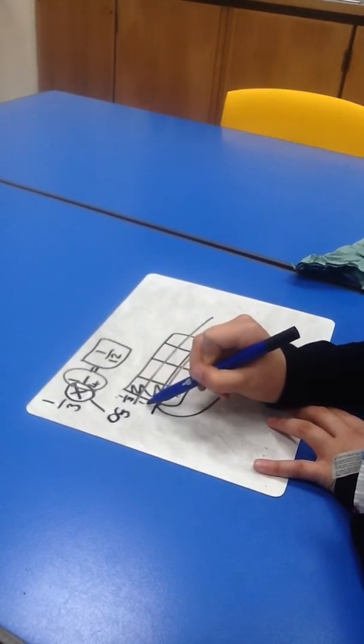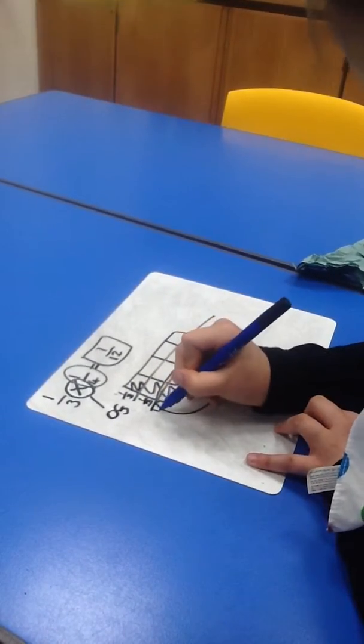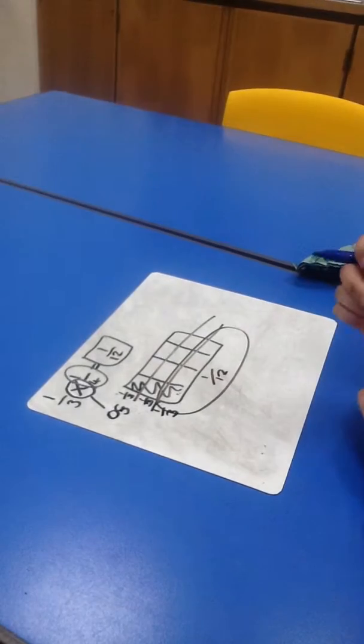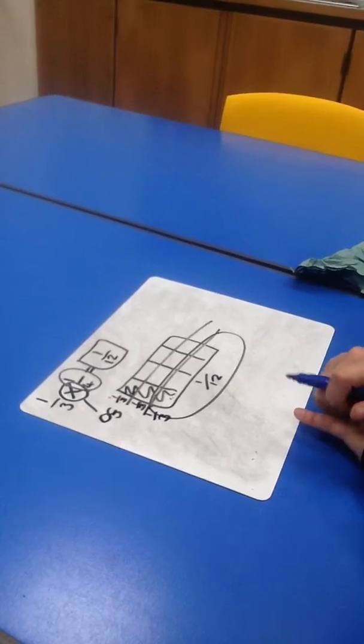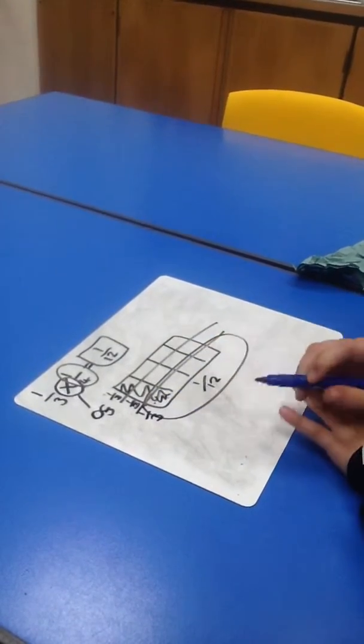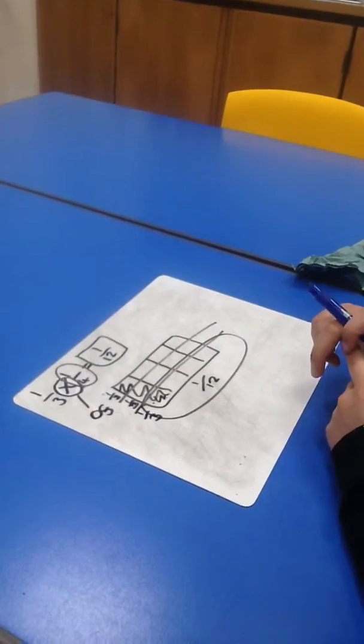So one third, one third, one third. And you've circled the whole third for the whole shape and it's that little bit that's coloured in that gives you the one third of the one quarter.